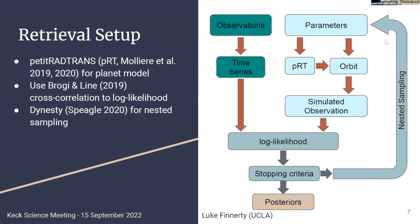To make more quantitative measurements, we put this into a retrieval setup. We used petitRADTRANS, which lets us do very quick radiative transfer models for the planet. The Brogi & Line 2019 paper provides a way to get a log-likelihood function from a cross-correlation, and once you have that, you have the full set of Bayesian statistics tools. We're using the Dynesty implementation for nested sampling; we did try an MCMC run and it gives the same results but takes much longer.